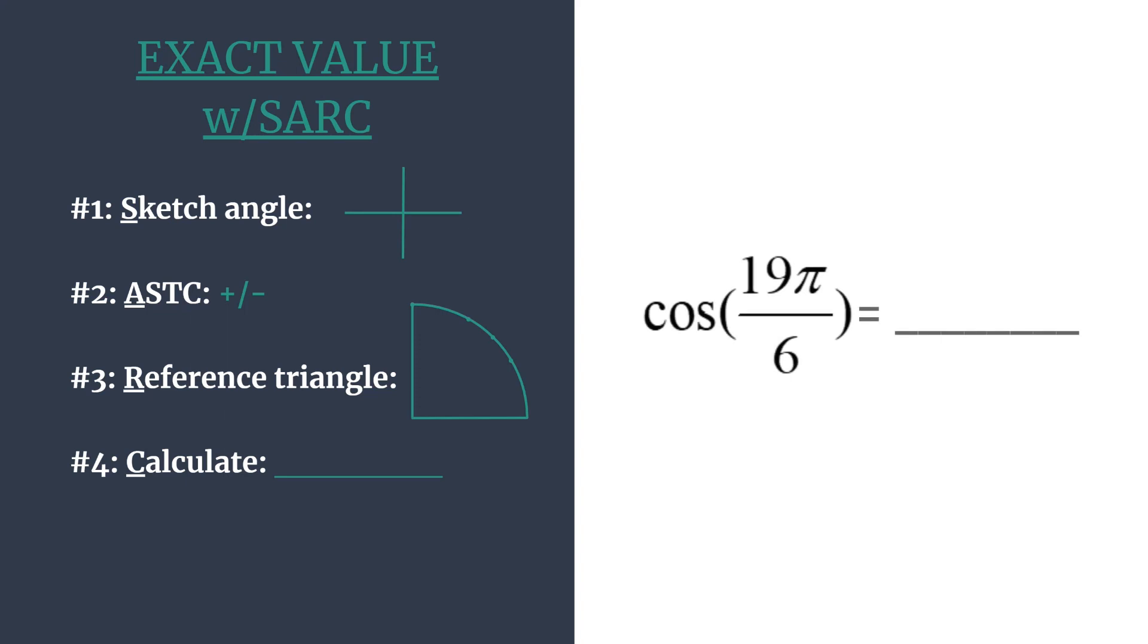So we're trying to find the cosine of 19 pi over 6. And to start, we're going to sketch the angle's terminal side. Notice that our angle is positive, so we're rotating in the counterclockwise direction. And also notice that this angle is a greater rotation than 2 pi, or all the way around a unit circle. Because 12 pi over 6 would be equivalent to 2 pi.